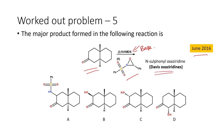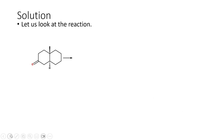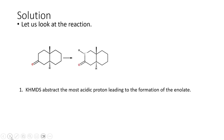The N-sulfonyl oxaziridines are used in Davis oxidation — they are used for oxidation reactions. We have a carbonyl compound and KHMDS is the base. There are a couple of acidic protons present. One alpha hydrogen is less accessible (hindered site) and the other is at the less hindered site. The base therefore abstracts the hydrogen at the less hindered site.